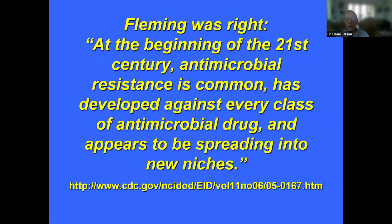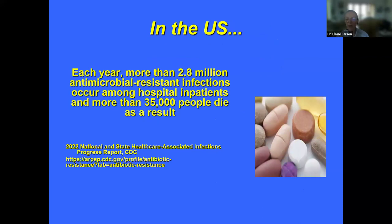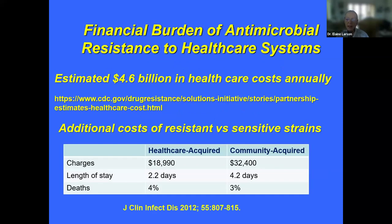At the beginning of the 21st century, antimicrobial resistance is common, has developed against every class of antimicrobial drug, and appears to be spreading into new niches. In the U.S., for example, each year more than 2.8 million antimicrobial resistant infections occur in hospital patients, and more than 35,000 people die as a result. The estimated cost of healthcare for antimicrobial resistance estimated by CDC is $4.6 billion a year.